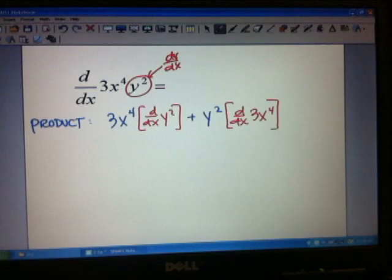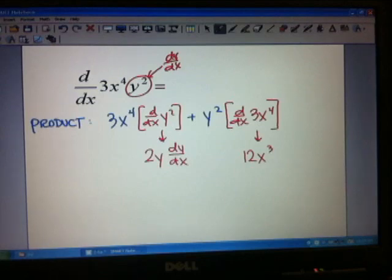So if I evaluate this derivative here, this one's going to be 2y dy/dx, and this one is going to be 12x cubed. So that I can just fill in my other pieces. I've got 3x to the 4th times that whole thing plus y squared times that whole thing.